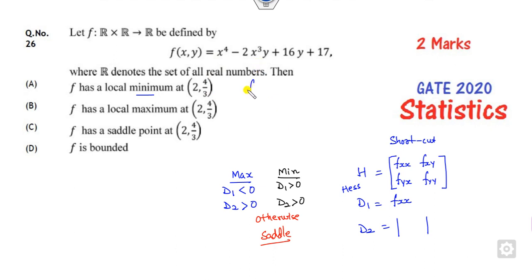So what is Fxx? Firstly, you have to find Fx. What is that? This is 4x³ - 6x²y. What is Fy? The partial derivative with respect to y: -2x³ + 16.